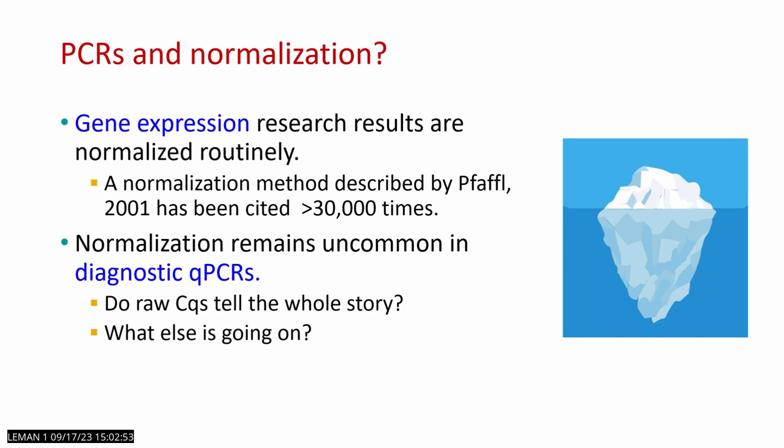In PCRs, normalization is routine for gene expression research. A normalization method from 2001 has been cited over 30,000 times. But normalization in routine diagnostics remains uncommon. We keep reporting raw EQs and assuming that all they mean is target concentration, but there's a lot more to it than we think.